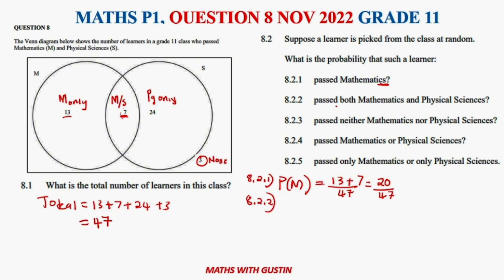Question 8.2.2 asks: what is the probability that a learner passed both Maths and Physical Science? Those who pass both Maths and Physical Science are represented by the intersection, which is 7, so the answer is 7 over 47.